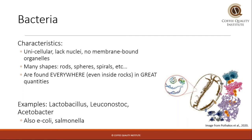Bacteria come in many shapes, like rods or spheres or even spirals. And they are really, really everywhere — even inside rocks or deep-sea thermal vents in huge quantities. In coffee and post-harvest processing, we know that certain bacteria are the most prevalent, like Lactobacillus, Leuconostoc, and Acetobacter. But there are all kinds of amazing bacteria in the world, and bacteria also include E. coli and Salmonella.